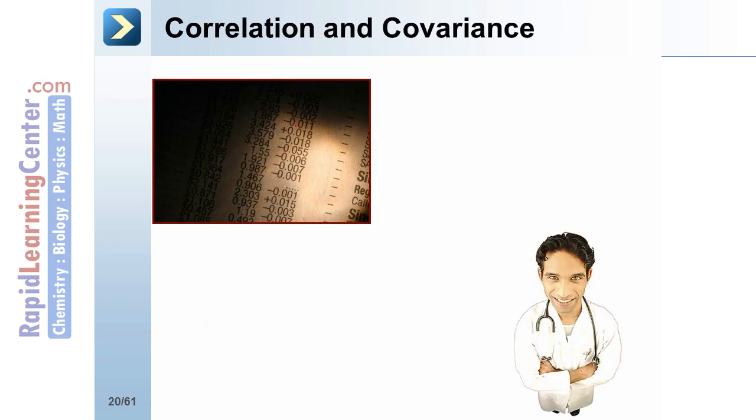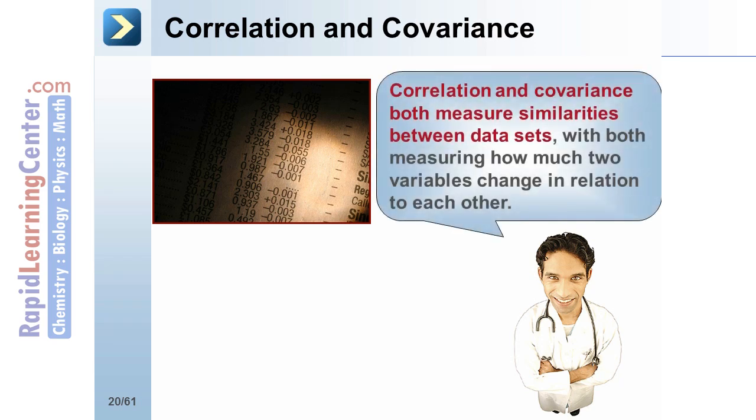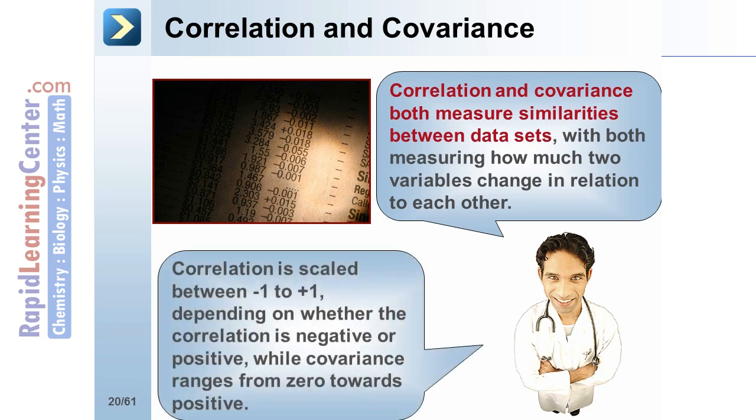Now let's take a look at correlation and covariance. Correlation and covariance both measure similarities between datasets, with both measuring how much two variables change in relation to each other. Correlation is scaled between negative 1 and positive 1, depending on whether the correlation is negative or positive, while covariance ranges from 0 towards positive infinity.